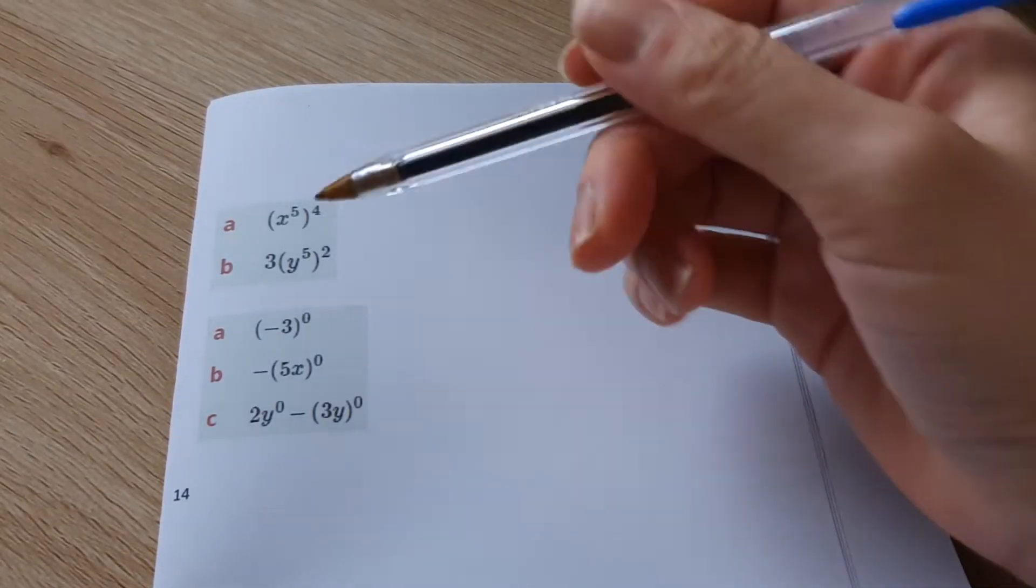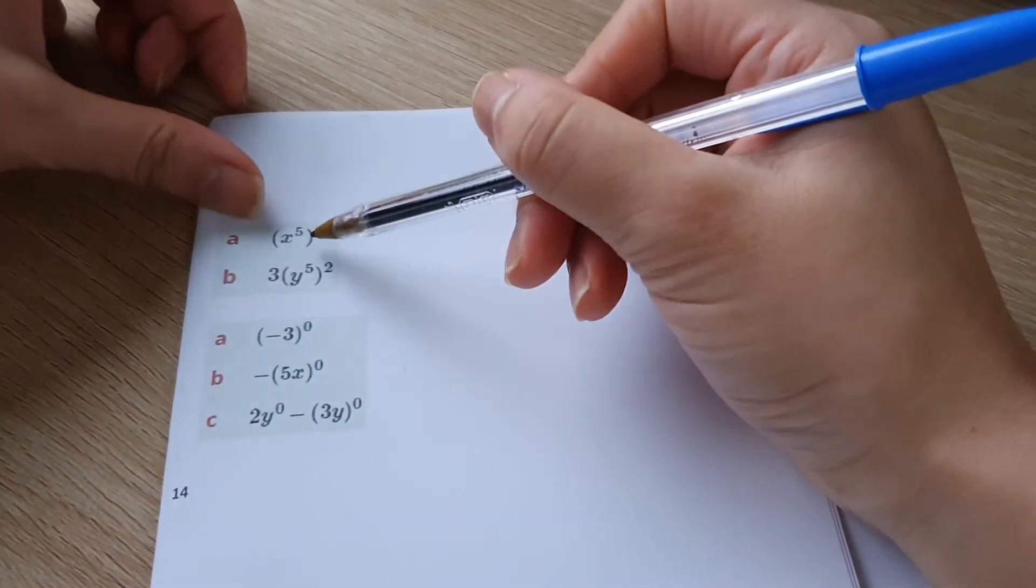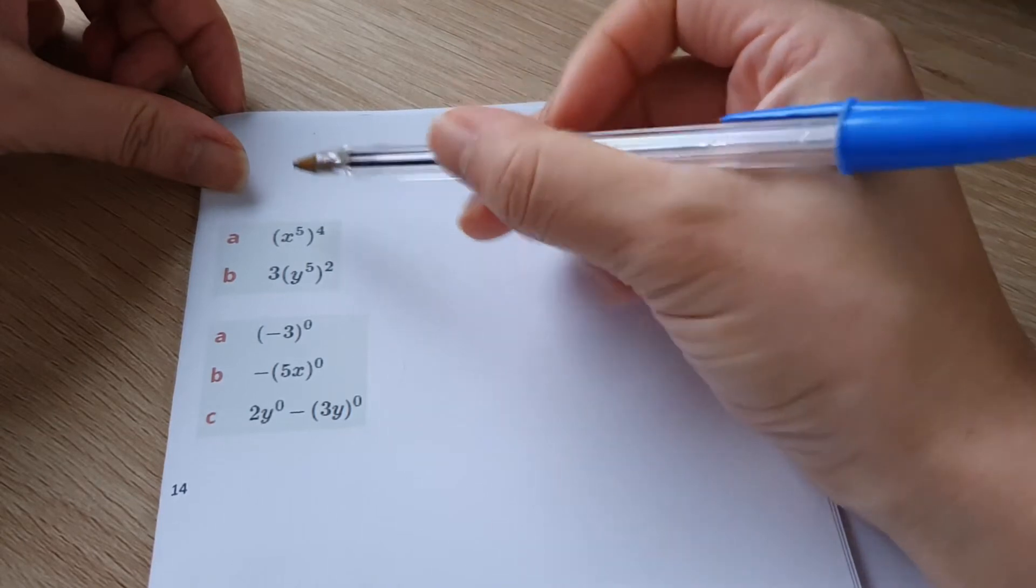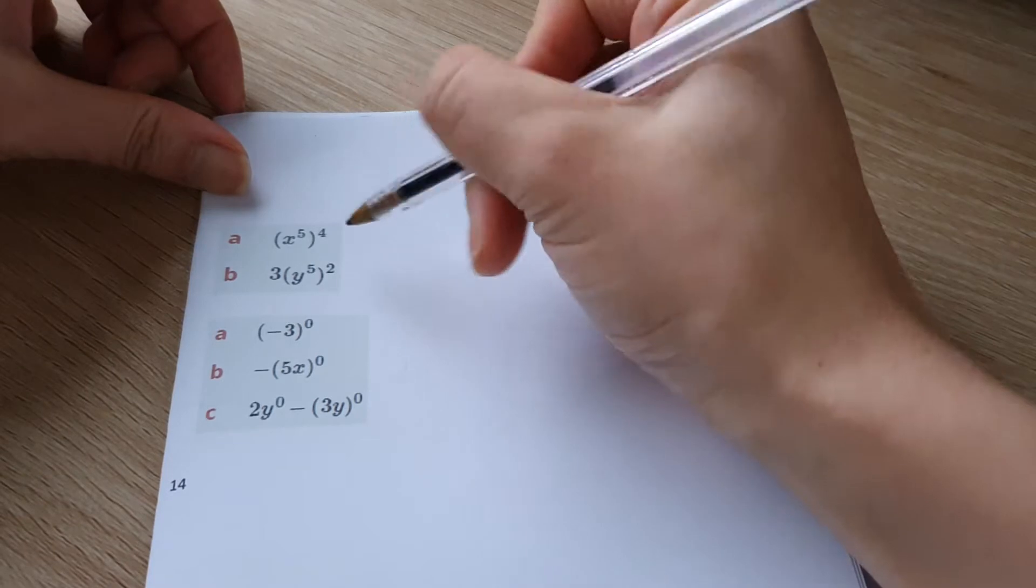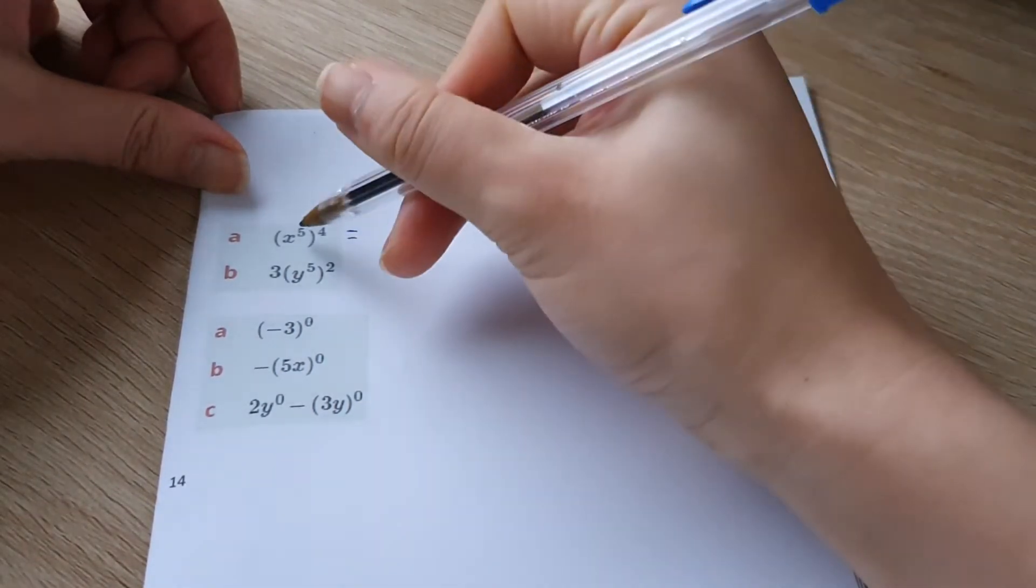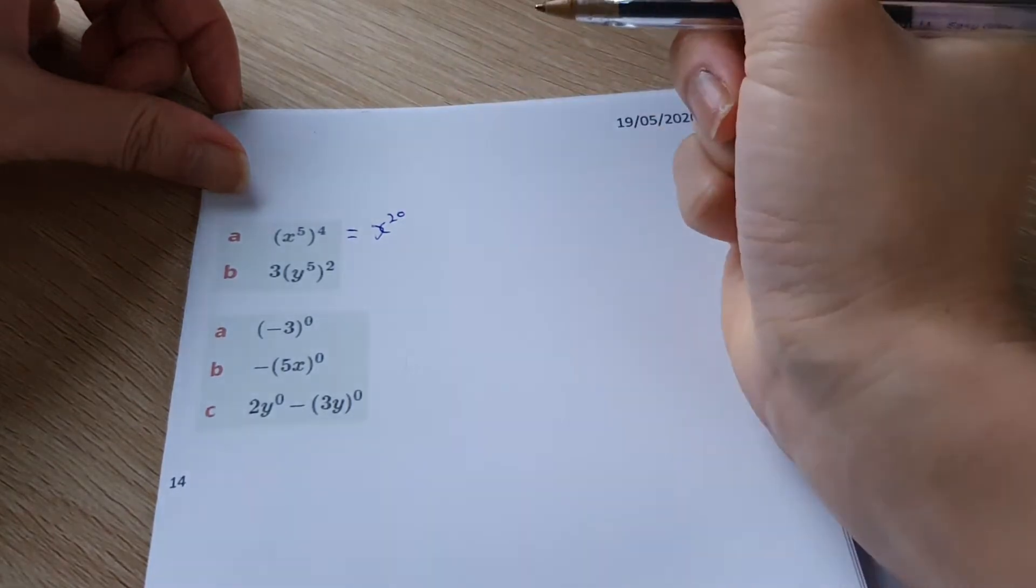So here is the index law where we actually, here is an index where we have to raise to another power. So we've got x to the power of five, that is raised again to the power of four. So all we basically do is multiply the powers together. So that's going to be x to the power of 20.